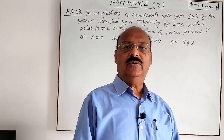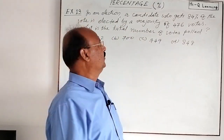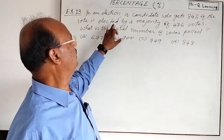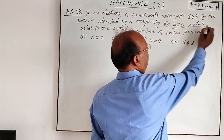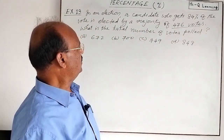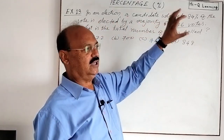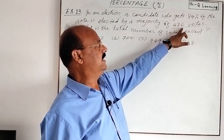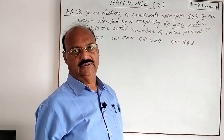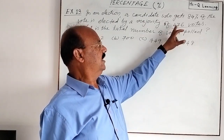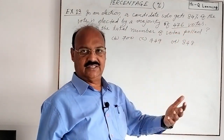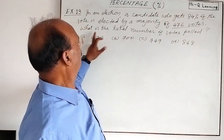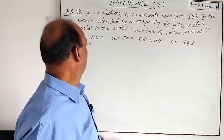Welcome students. Here we are going to discuss a very interesting and important question from the topic percentage. In an election, a candidate who gets 84 percent of the vote is elected by a majority of 476 votes. What does it mean? It means by getting 84 percent of the total votes, the winner has got 476 votes more than his opponent — meaning his opponent is getting 476 votes less than the winner. What is the total number of votes polled?